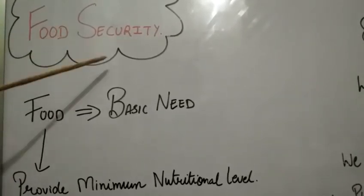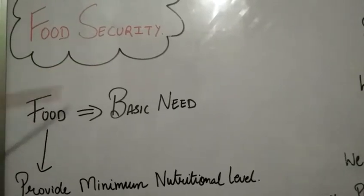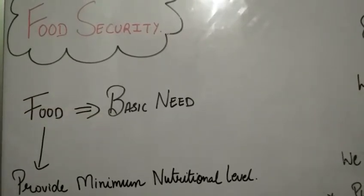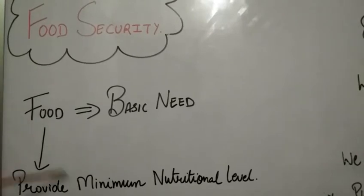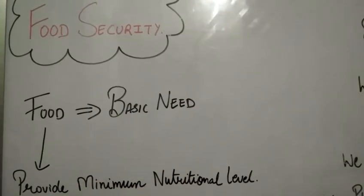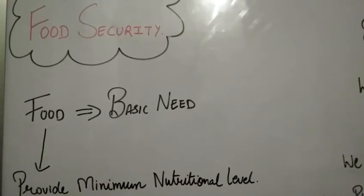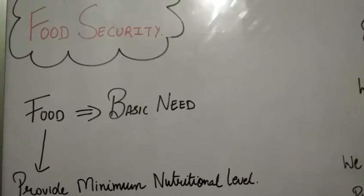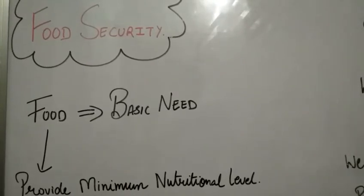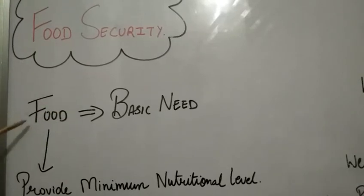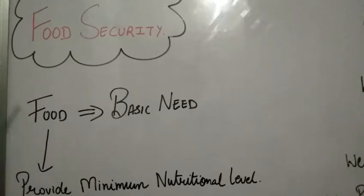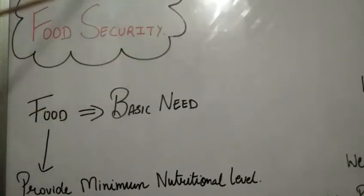We will talk about food security. Food is the only thing which provides the minimum nutritional level to human beings, animals, and plants — it provides the minimum survival energy. Those who don't have food, there are some segments of population who don't get food, they don't have access to food. So they are basically facing the problem called food insecurity.